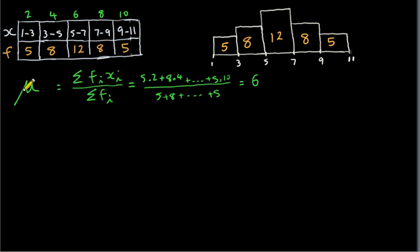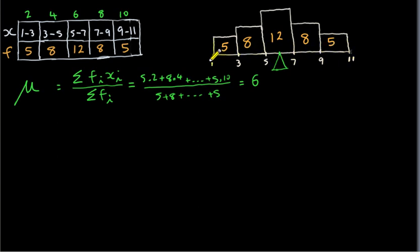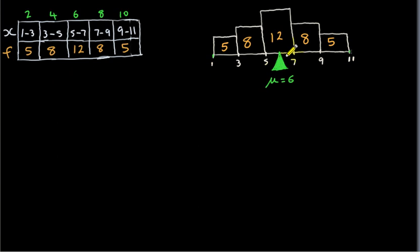The mean of a population is denoted by the Greek letter mu. In this situation, the mean is six. The mean is also the balance point of a distribution. For a perfectly symmetric distribution, the balance point is in the very center of all the x values — it's the midpoint of the line segment from one to eleven. We have the same amount of weight on the left side as on the right. It's like a seesaw.